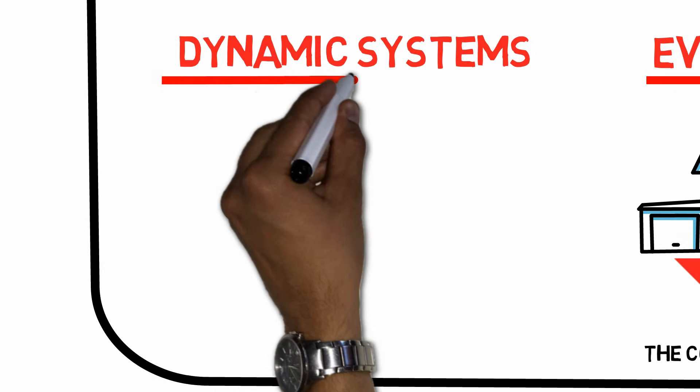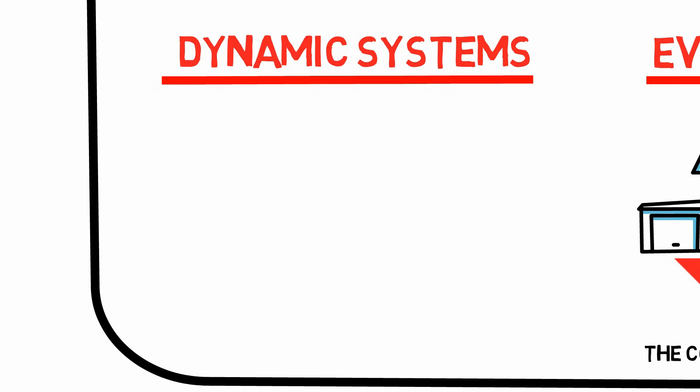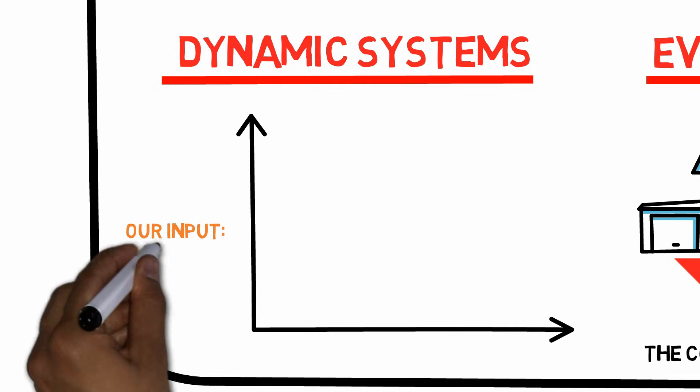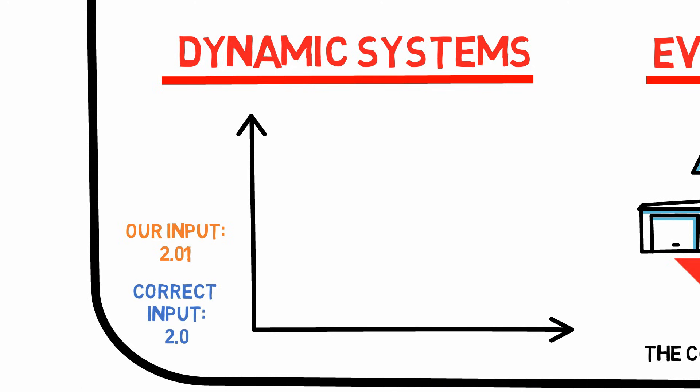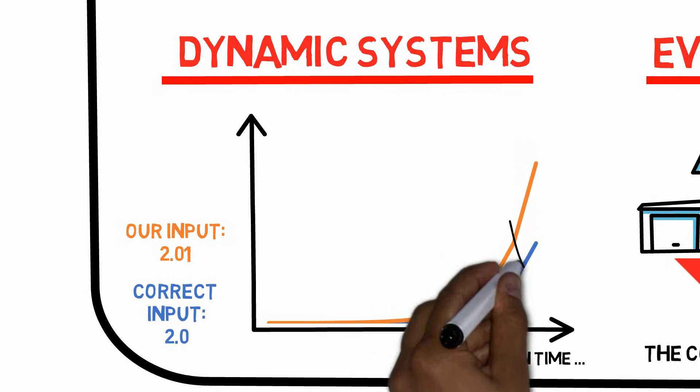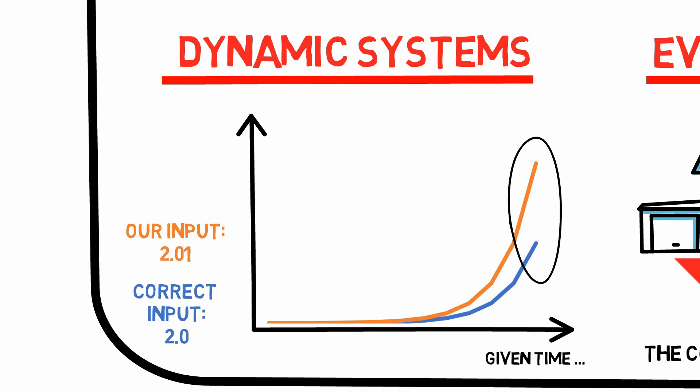Dynamic systems. When the behavior of the system at one point in time influences its behavior in the future, we have a dynamic system. This means that even if we are just slightly off in assessing the current state of the system, we will end up very wrong when predicting the future of it, as mistakes multiply over time. This is the reason why we can forecast the weather accurately a few days ahead, but not more than that.